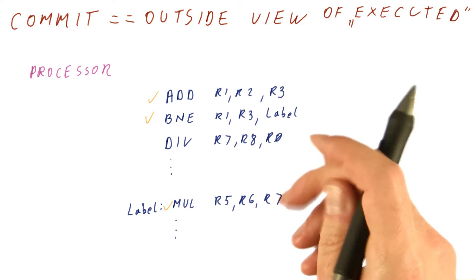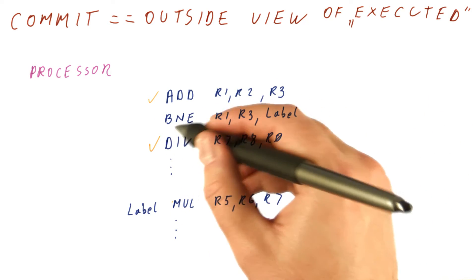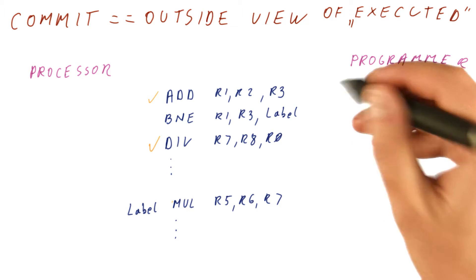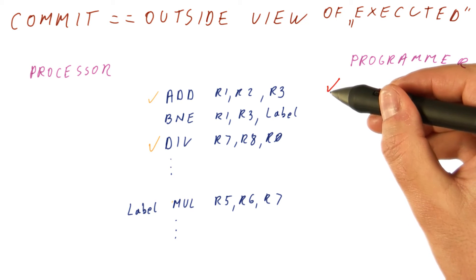So at some given point in time, the processor sees maybe this as fully executed but not committed. At that same point in time, only this instruction is perhaps committed, so the programmer sees just this as done.